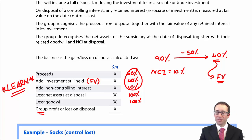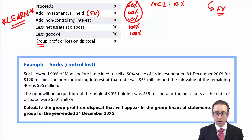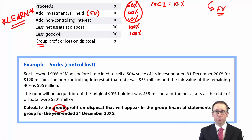You take your proceeds, you add on the investment still held at fair value, add on the non-controlling interest and deduct what we are disposing of, being the goodwill and the net assets at disposal. Let's go through and have a look together at the example called SOX, where we have the scenario where control is lost.